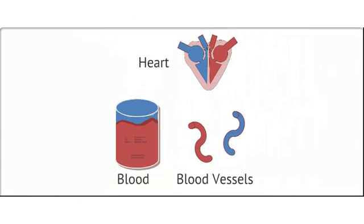There are three main components to circulatory systems: the central pump, which is the heart, the vascular system, the blood vessels, and the circulating fluid, which is the blood.